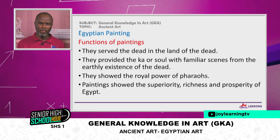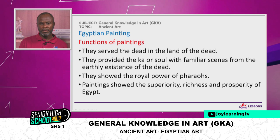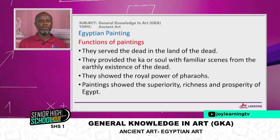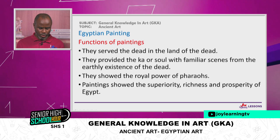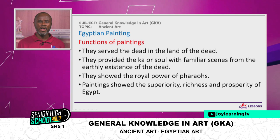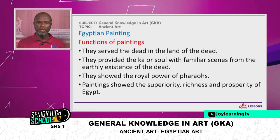Painting provided the Ka — the soul — with familiar scenes from the earthly existence of the dead. The paintings would depict some of the scenes and conquests of the deceased on the various walls of the tomb, just to remind him that he lived a good life and should also live another good life after death. Paintings showed the royal power of pharaohs — if there was a very powerful pharaoh, paintings around his tomb depicted his strength, his wealth, his number of servants. Paintings also showed the superiority, richness, and prosperity of Egypt.